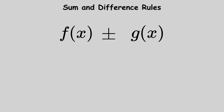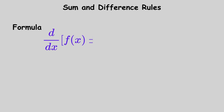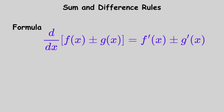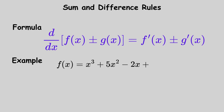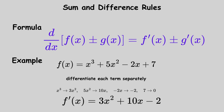When functions are added or subtracted, differentiate each term independently and keep the same signs. The formula is: the derivative with respect to x of f of x plus or minus g of x equals f prime of x plus or minus g prime of x. For example, if f of x equals x cubed plus 5x squared minus 2x plus 7, differentiate each term: x cubed becomes 3x squared, 5x squared becomes 10x, minus 2x becomes minus 2, and 7 becomes 0. So f prime of x equals 3x squared plus 10x minus 2.